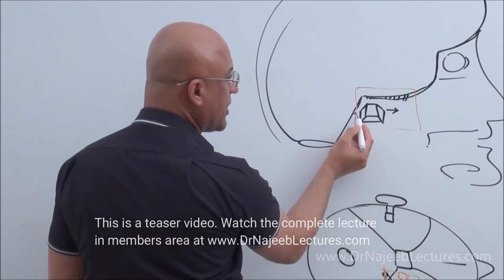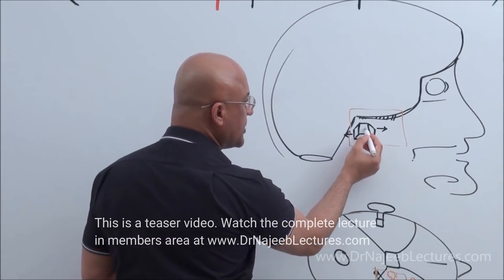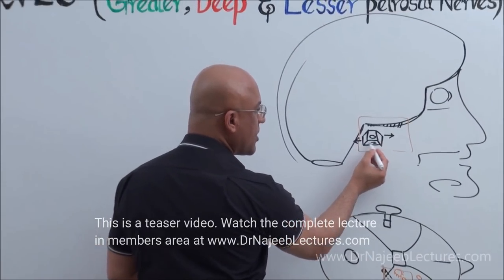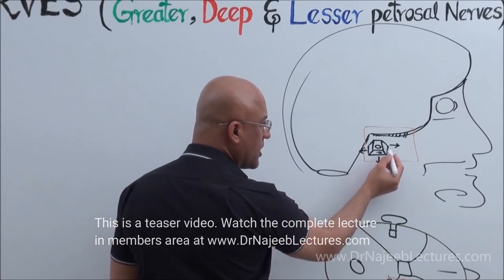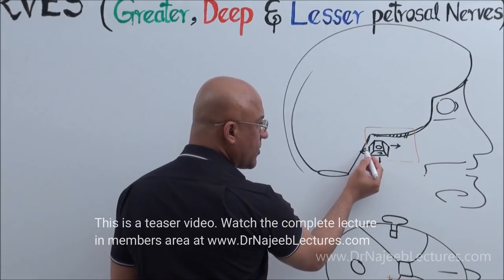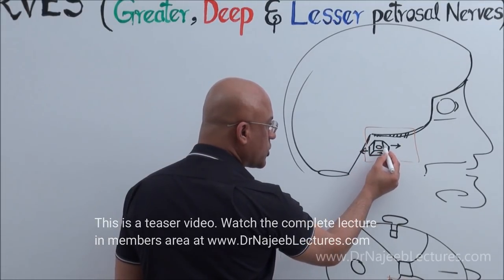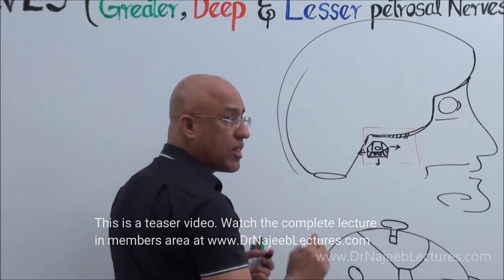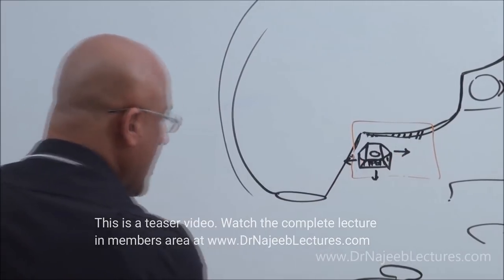The middle ear cavity has: an anterior wall, a posterior wall, a medial wall — the medial wall has the promontory — a floor, and a lateral wall. Now I am going to take this middle ear diagram and redraw it here in reference to the surrounding structures.